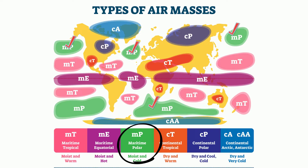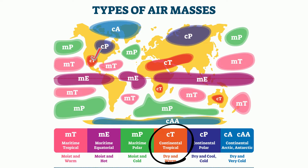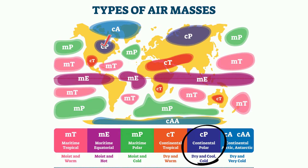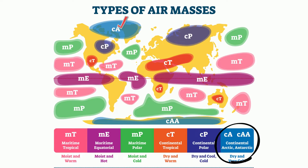Remember, maritime air masses are formed over the ocean. A continental tropical air mass will be warm and dry. A continental polar is cold and dry. And a continental Arctic and Antarctic is very cold and dry. Remember, continental air masses form over continents.